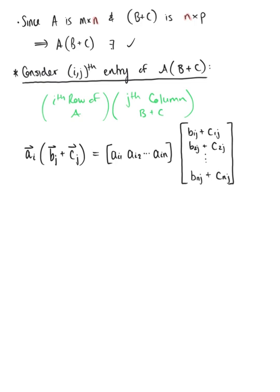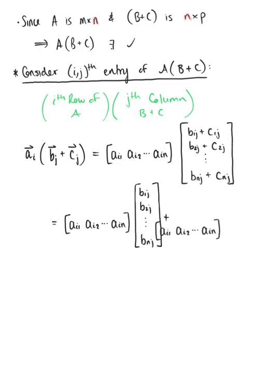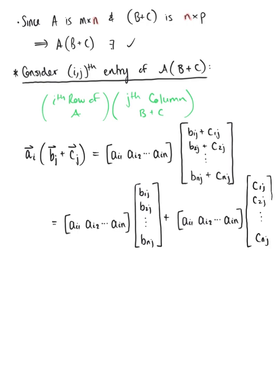By properties of vectors, we can distribute the i-th row vector of A through to both column vectors of B and C. We rewrite this as the i-th row of matrix A multiplied by the j-th column of matrix B — entries from the first row through the n-th row, j-th column — plus the i-th row of matrix A multiplied by the j-th column of matrix C, entries from the first row through the n-th row, j-th column.